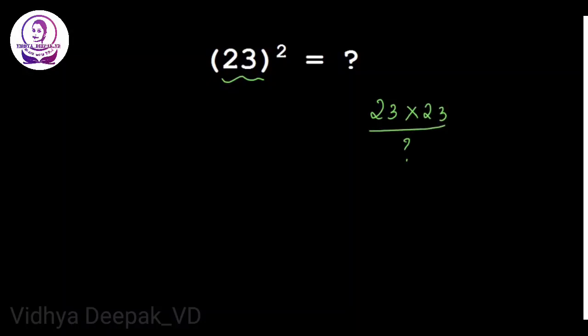We don't have so much time in our competitive exams to solve. So for 23 square, first you have to find what is 3 square. It's 9, but you should not write that as a single digit - you should write it as a double-digit number, that is 09.